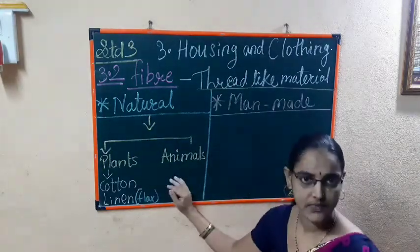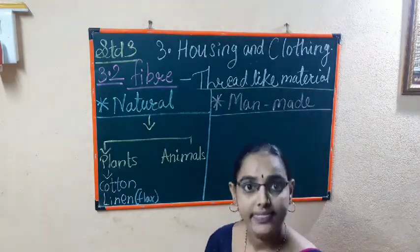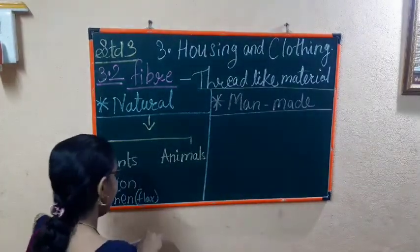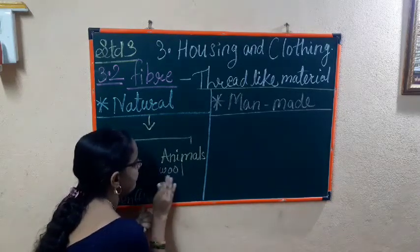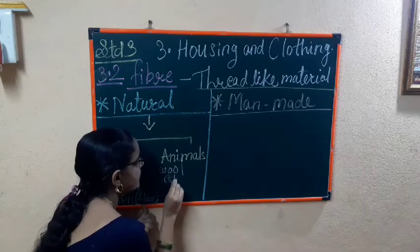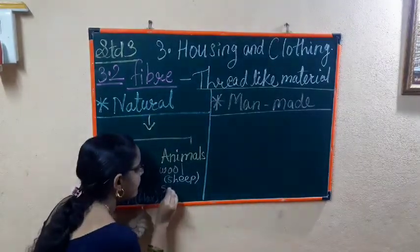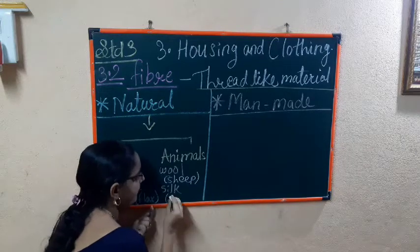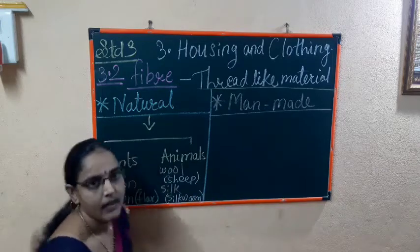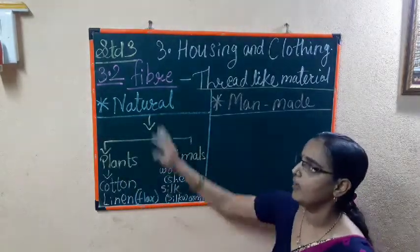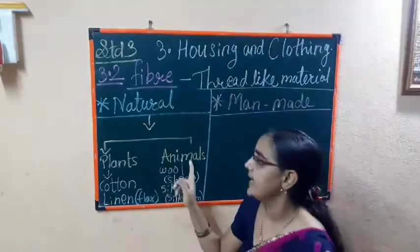Moving further with animal fibers — we get some threads from animals. We get wool from sheep. And we get silk from the silkworm. This is the part about natural fibers — natural fibers are the fibers that we get from plants and animals.